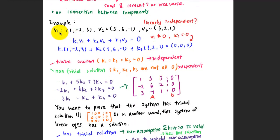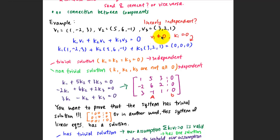For example, given three vectors v1, v2, and v3, we want to know whether they are linearly independent or not. If they are linearly independent, this equation must be valid: k1·v1 + k2·v2 + k3·v3 = zero vector. Since v1, v2, v3 are not zero vectors, k1, k2, k3 must all be zero for this equation to hold — because the only solution to produce a zero vector is for k1, k2, k3 to equal zero.